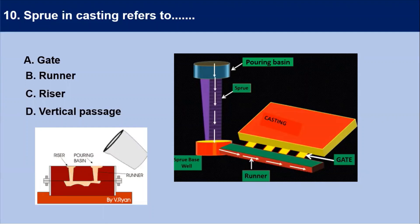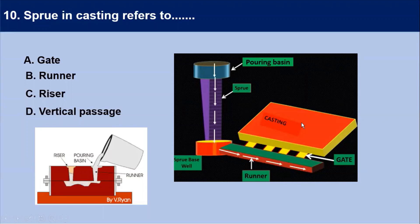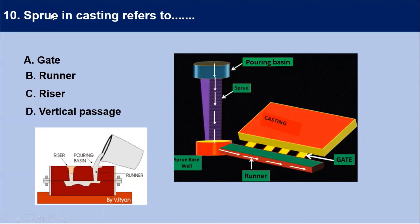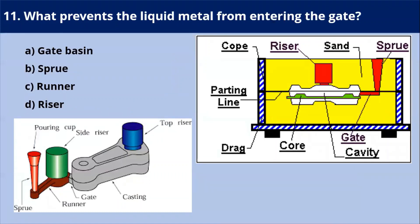Next question: sprue in casting refers to — a sprue is a vertical passage through which liquid material is introduced into a mold. It is a large-diameter channel through which material enters the mold, connecting the pouring basin to the runner, as seen in this diagram. Sprue in casting refers to the vertical passage. Your answer is D.